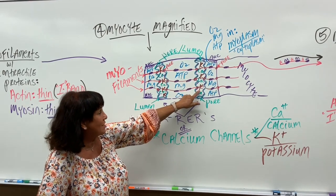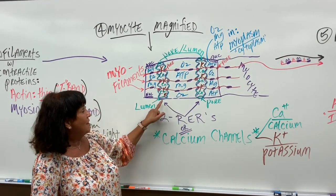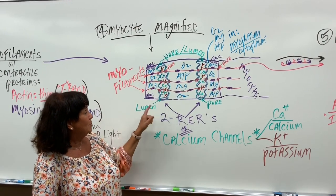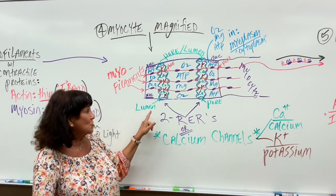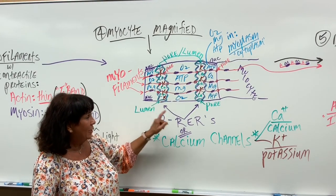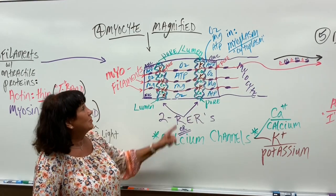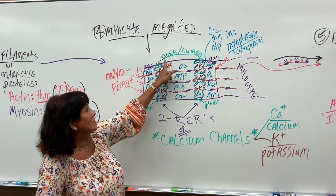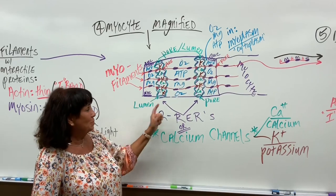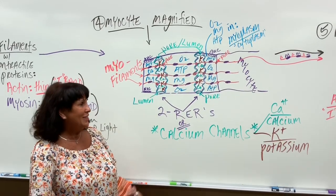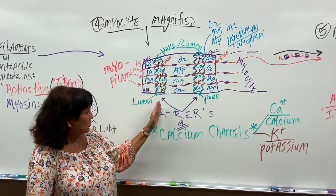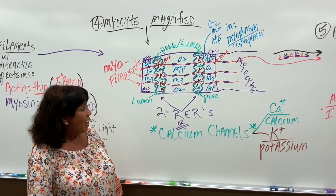The RERs store calcium and potassium, and the openings to the RER on the top and the bottom are called a lumen, which is a central cavity or space, or they're called a pore - either one. So I labeled it pore lumen or lumen pore - it doesn't make any difference. It's a space that allows things to go through.